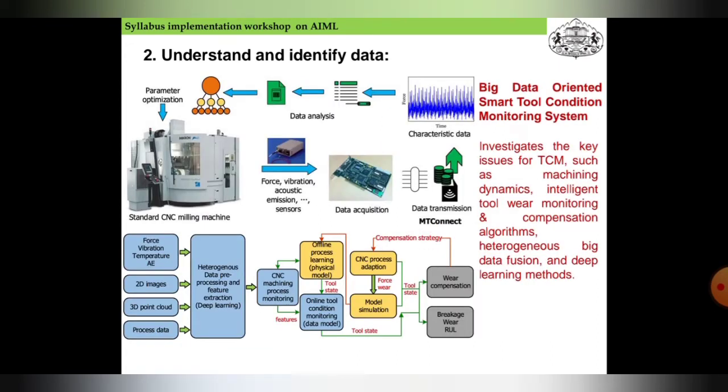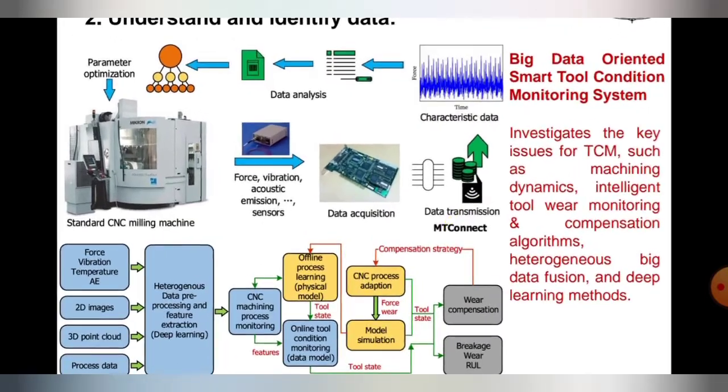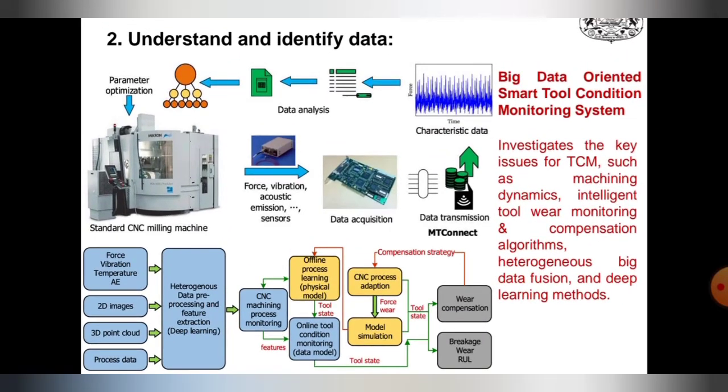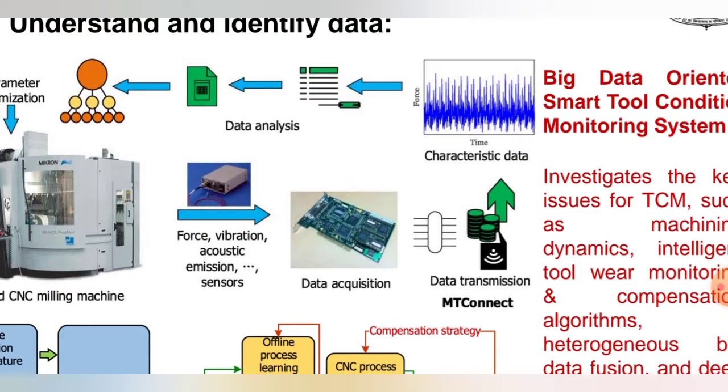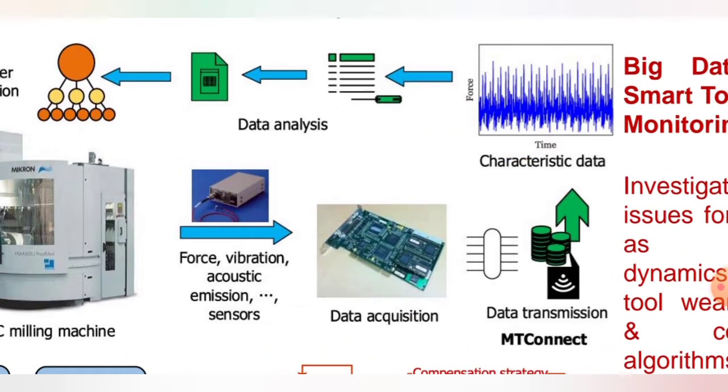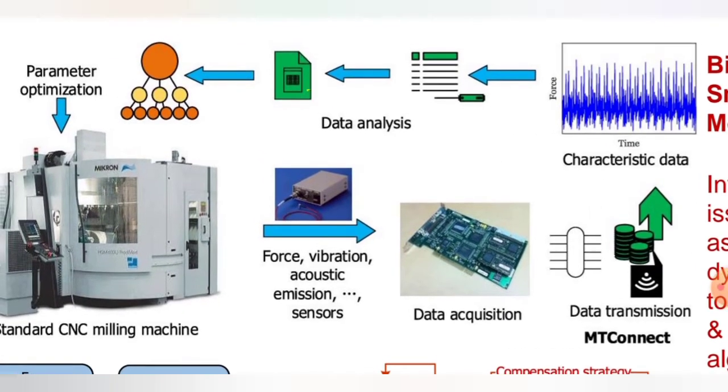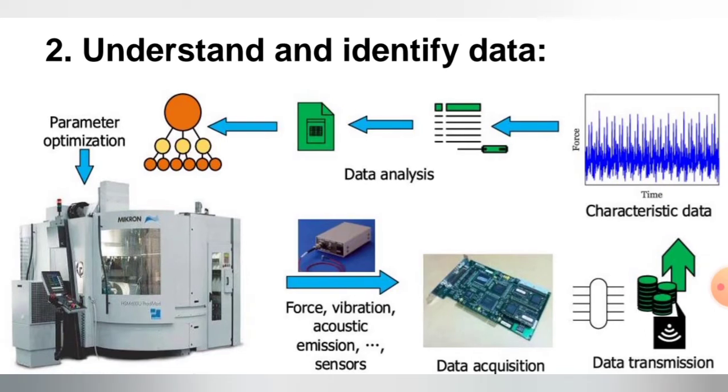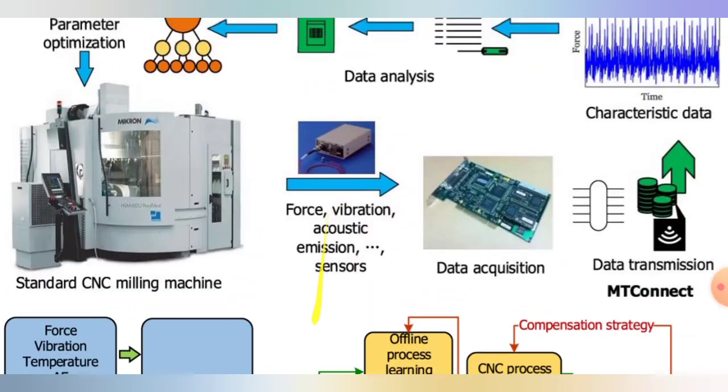This is understanding and identifying data in which a big data oriented smart tool condition monitoring system is given. First, we can see time versus force characteristics data that is sent to data analysis. The data analysis is characterized or filtered using binary tree, decision tree, or various types of searches. Later on, parameter optimization occurs using standard CNC machining tools.